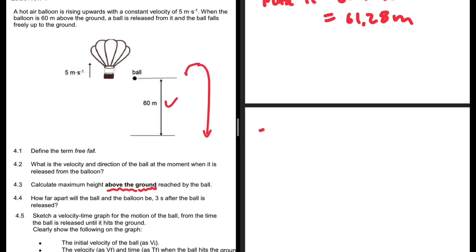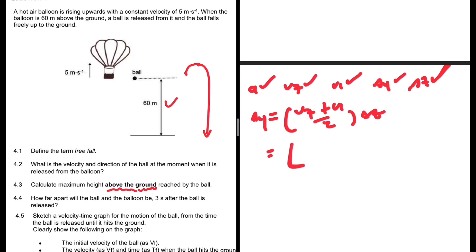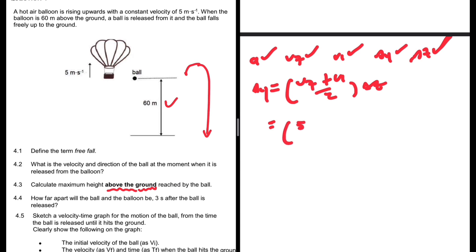The balloon has an acceleration of zero. Vf equals vi because it's moving at constant velocity, and we're interested in delta y. We have the time which is 3 seconds. Delta y equals vf plus vi over 2 multiplied by delta t. Vf is 5, vi is also 5, divided by 2, multiplied by 3. That is 15 meters, so the balloon has gone up 15 meters in 3 seconds.